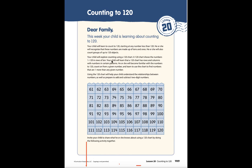Your child will explore counting using a 120 chart. A 120 chart shows the numbers from 1 to 120 in rows of 10. Your child will learn that a 120 chart has rows and columns with numbers in certain patterns. He or she will become familiar with the numbers to 120, count on from a given number, and learn to use the chart to find numbers that are one more than any given number.